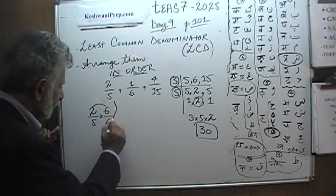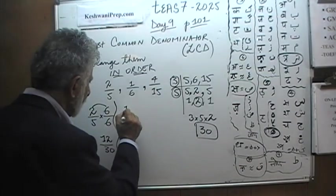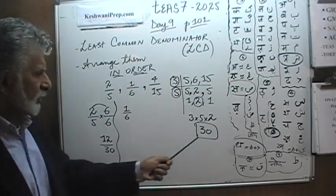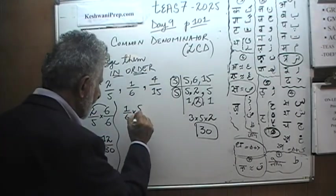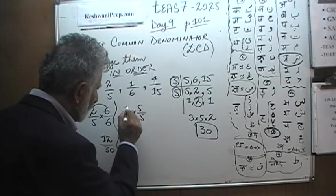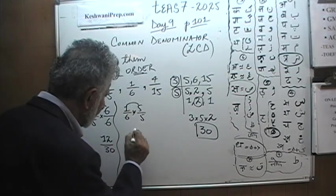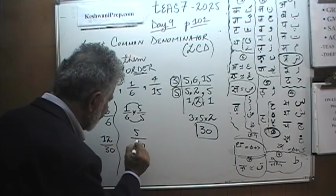That's the first one. Let's look at the second one. 1 sixth. How can we convert the bottom into 30? That's very straightforward. Multiply top and bottom by 5. Because 6 times 5 is 30. 1 times 5 is 5. And on the bottom, we'll end up with 30. That one is done.